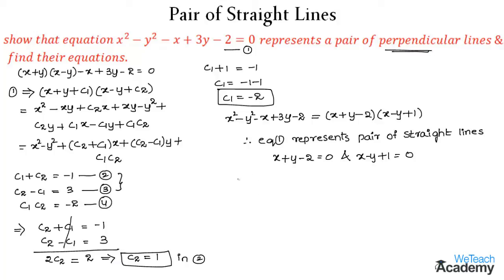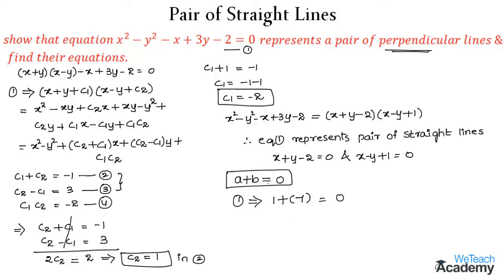For the lines to be perpendicular, the condition is that a + b = 0, where a is the coefficient of x² and b is the coefficient of y². From equation 1, a = 1 (coefficient of x²) and b = -1 (coefficient of y²), so a + b = 1 + (-1) = 0. This satisfies the condition, therefore the lines are perpendicular.